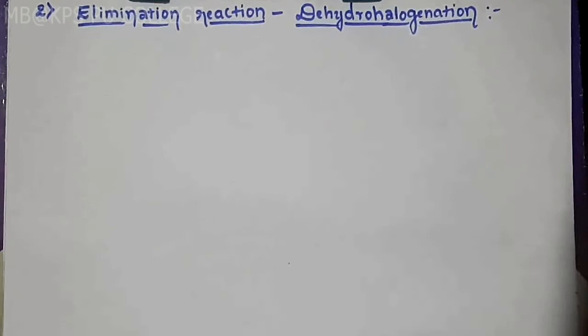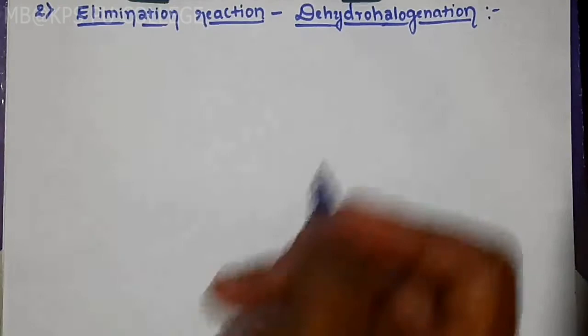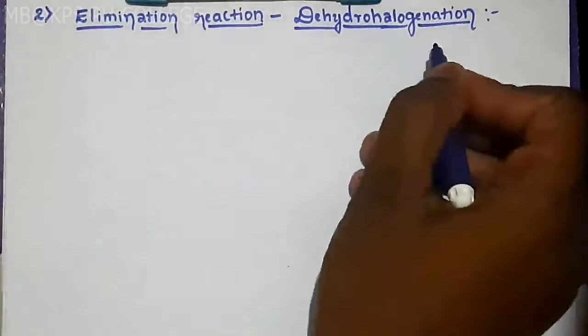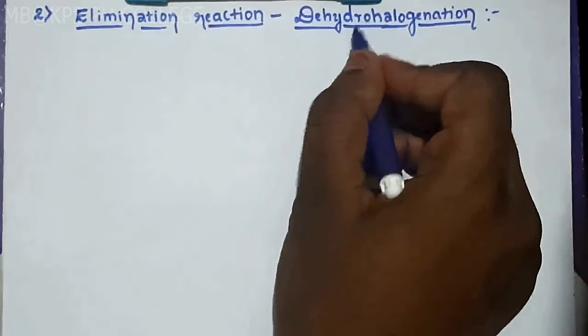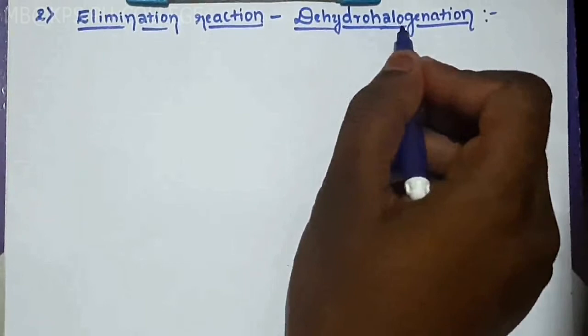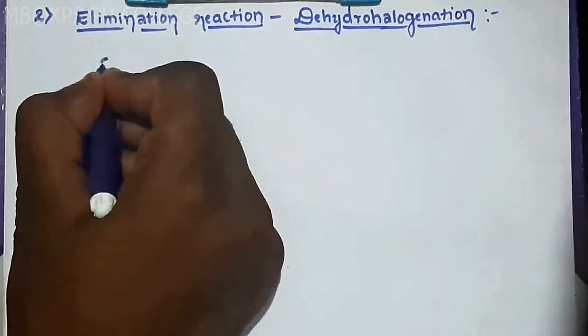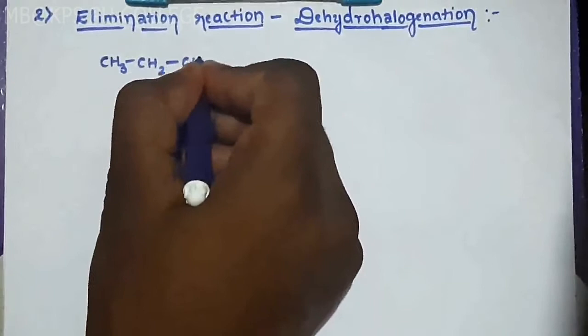Now the next reaction is elimination reaction. The elimination reaction involves dehydrohalogenation. Dehydro means removal — so dehydrohalogenation means removal of both hydrogen and halogen from the molecule.